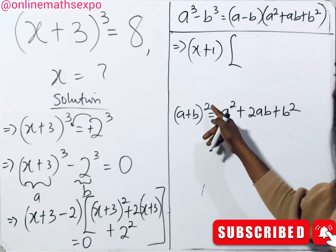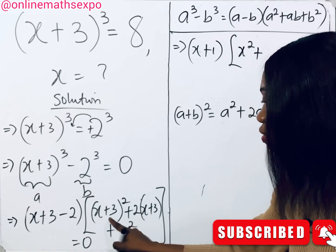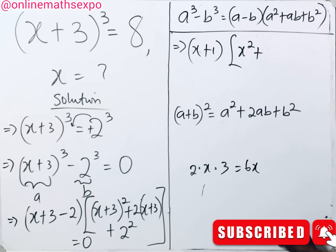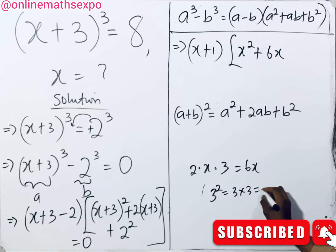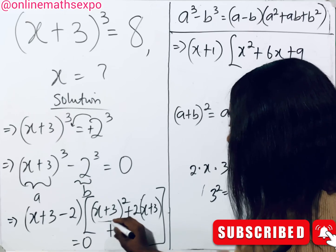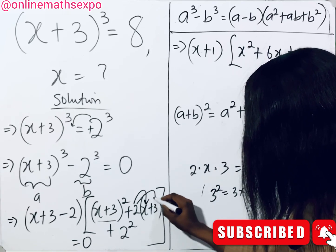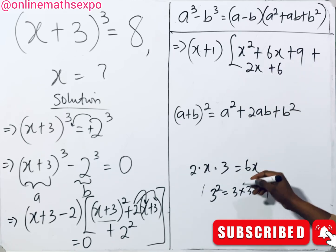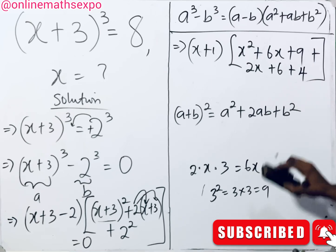So expanding (x + 3)² gives us x² + 6x + 9. Then for the 2(x + 3) term: 2 times x gives 2x, and 2 times 3 gives 6. Then plus 2² = 4. Close the bracket. Everything is equal to zero.